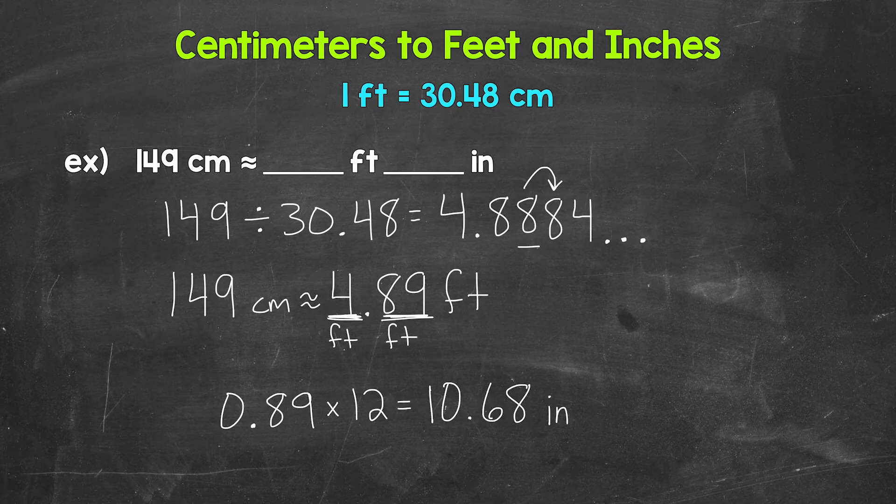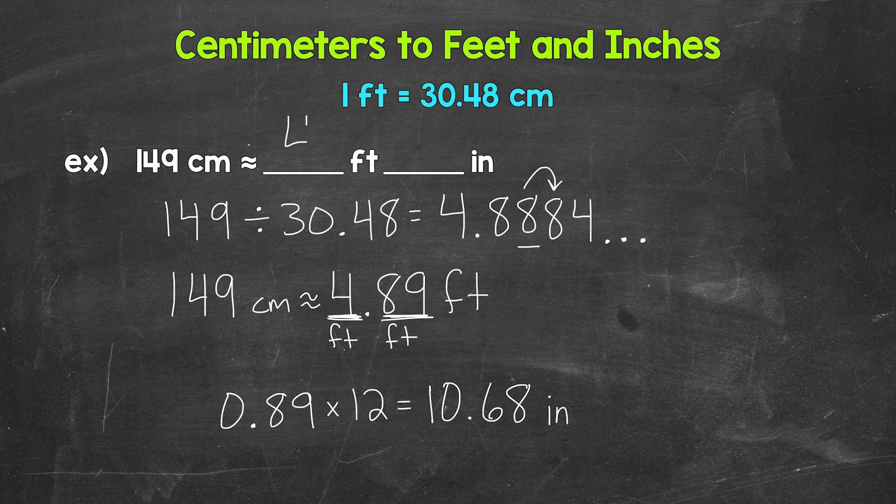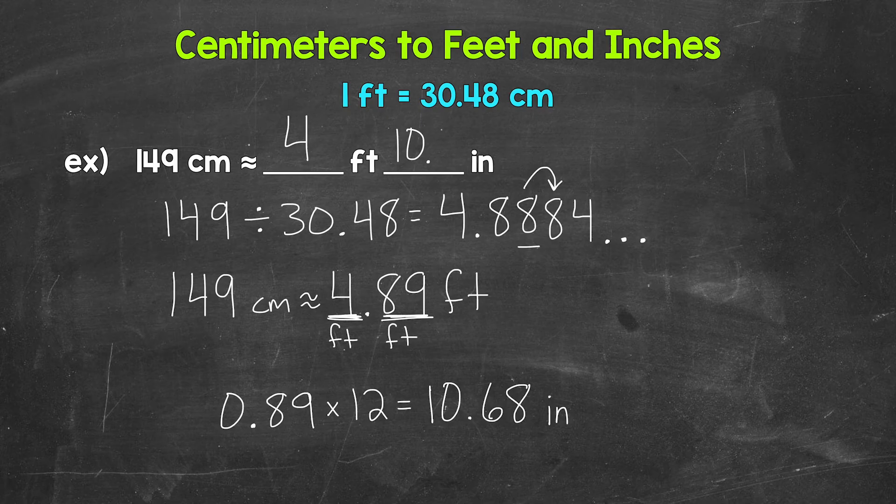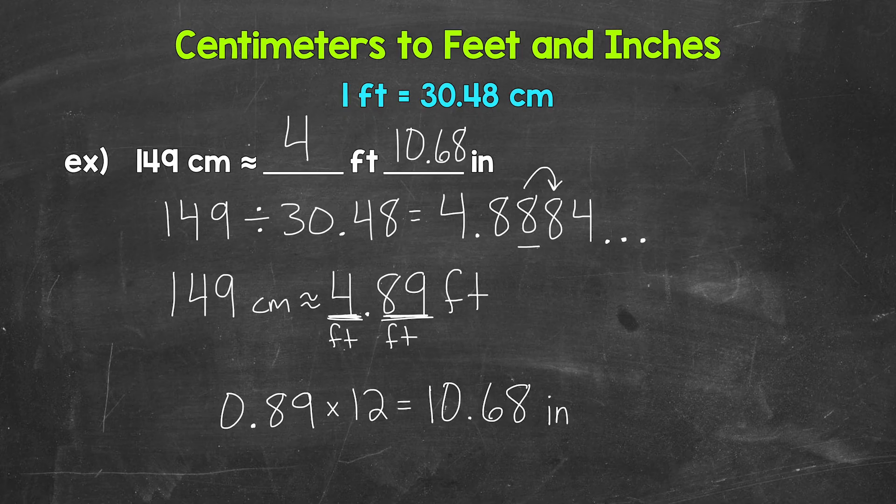So we have 4 feet and then this 0.89 equals 10.68 inches. So 149 centimeters is approximately 4 feet, 10.68 inches. And if we wanted to, we could round this to the nearest inch to avoid any decimals.